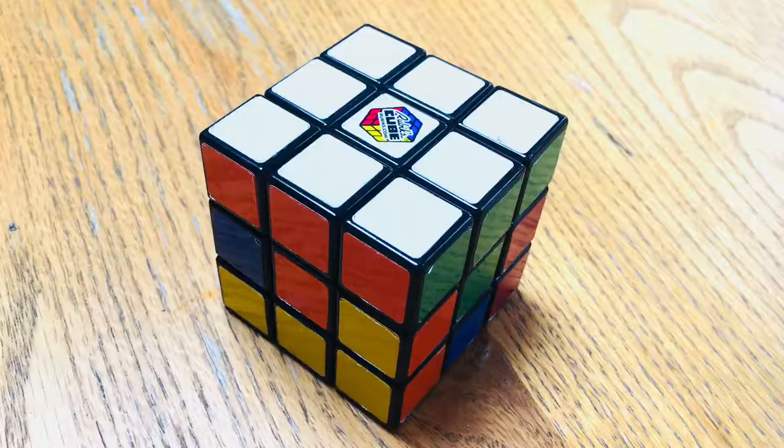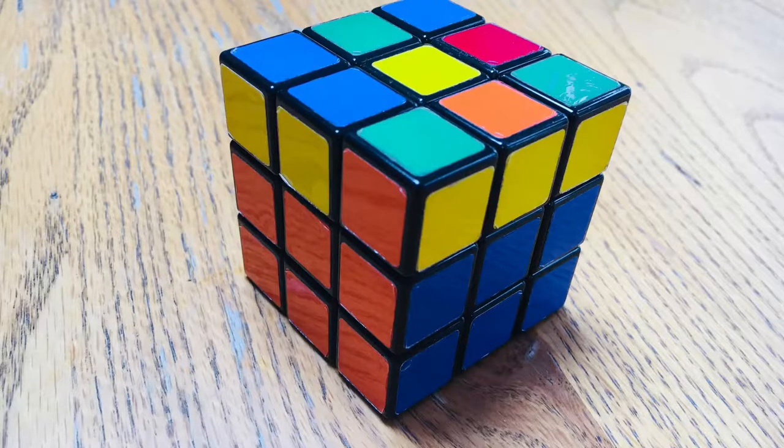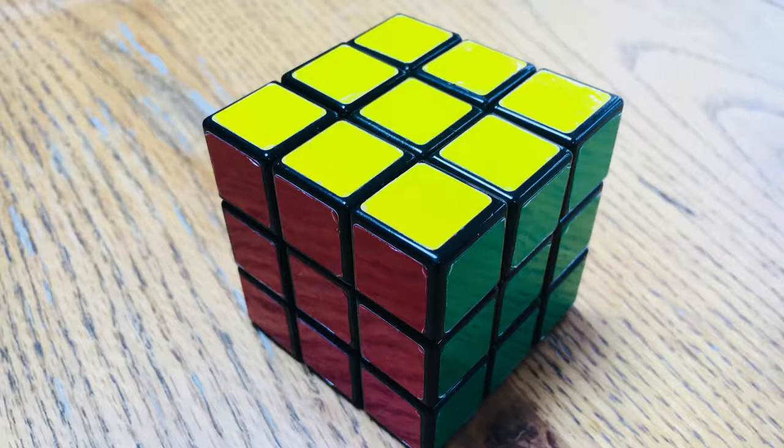That's white cross, white face, middle layer, yellow cross, and then solve the yellow layer. And what I want to do is just show you a few extra algorithms to make you a little bit more efficient in your solve.